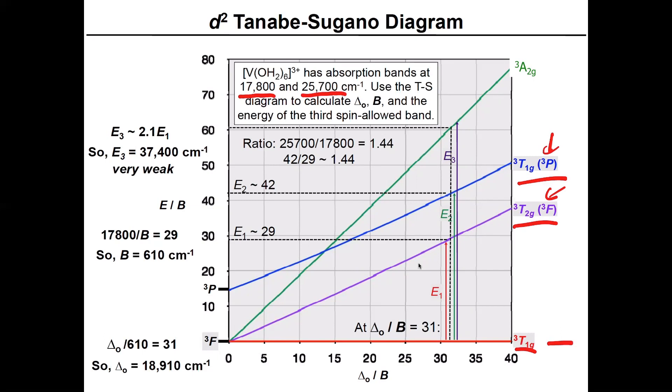That's why you'll see here it's in parentheses triplet P and in here it's parentheses triplet F. And then finally there's the third excited state that we're expecting. And remember the way that this works now is this no longer looks invariant to ligand field, because we turned the diagram.